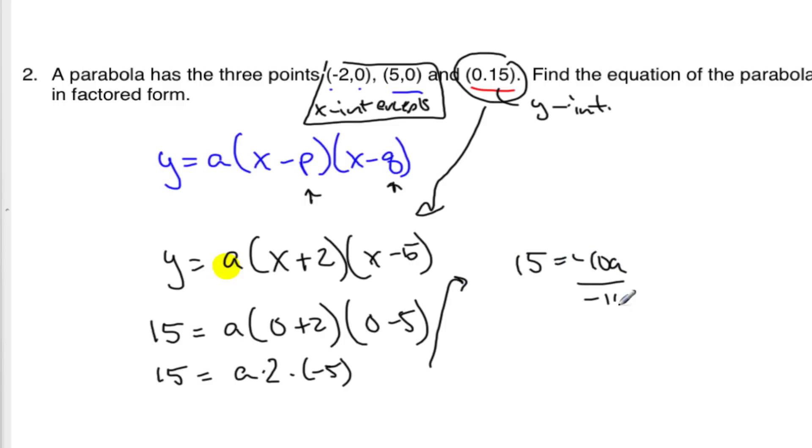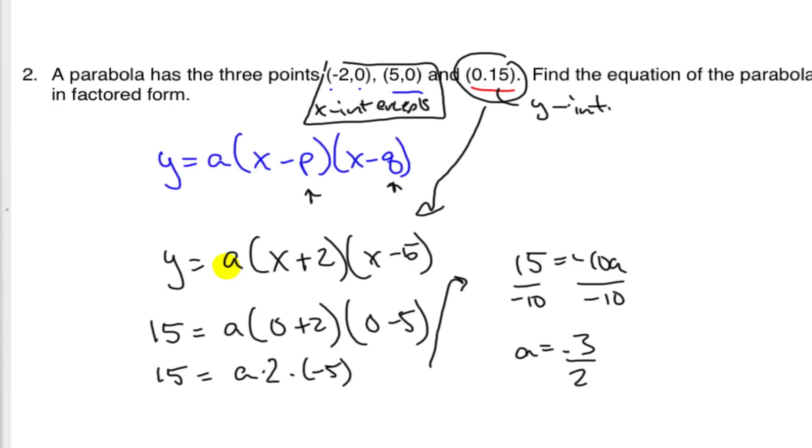And so a then, divide both by 5 to simplify that. I get 3 over 2 and it's a negative fraction.